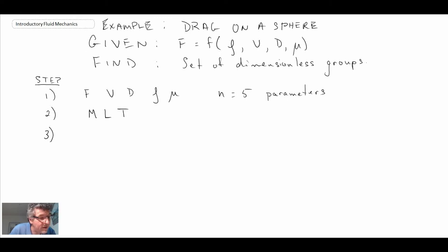Looking at our primary dimensions, force we can rewrite as mass, length, time squared. Velocity is length per unit time. Diameter is a length. Density is mass per length cubed. And viscosity is mass per length time. There we can see we have r equals three primary dimensions, because all we see in here is mass, length, and time.